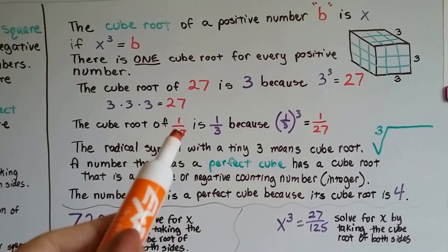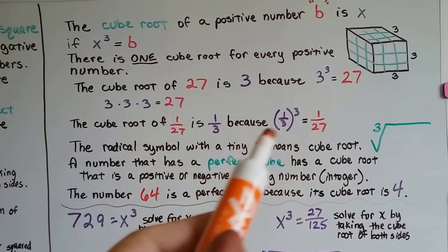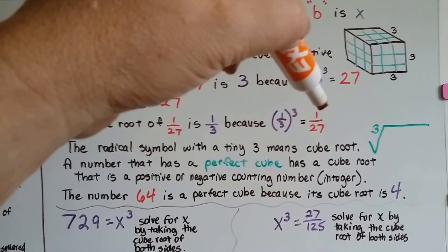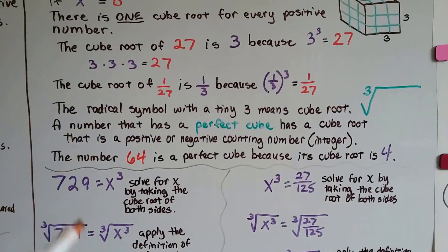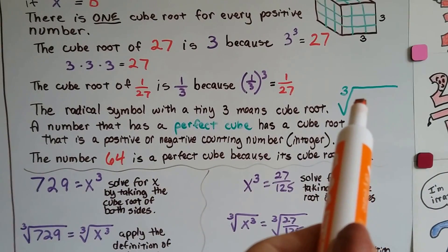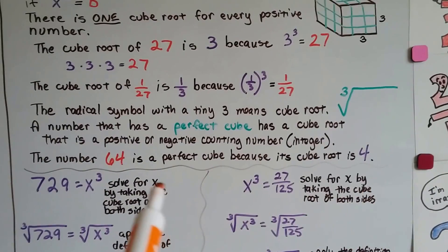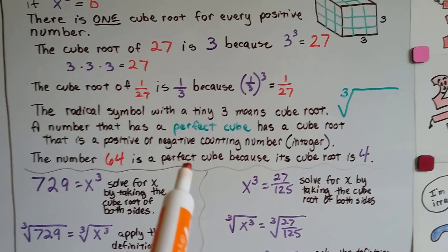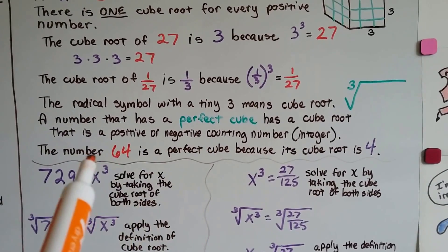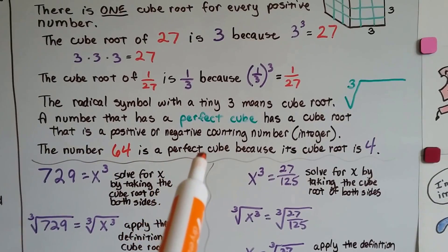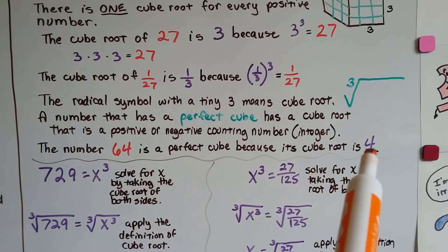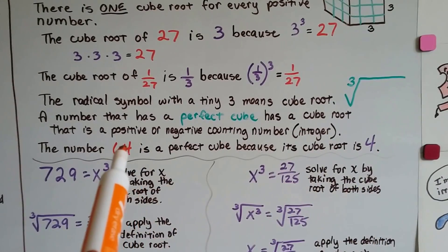And the cube root of 1/27 is 1/3, because 1/3 to the third power — 1/3 cubed — is 1/27. The radical symbol with a tiny 3 means cube root. A number that has a perfect cube has a cube root that is a positive or negative counting number and integer. The number 64 is a perfect cube because its cube root is 4. 4 times 4 is 16, and 16 times 4 is 64.